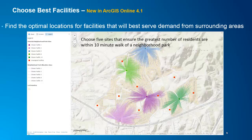In our third example, the facilities are parks. Choose Best Facilities can help us find five sites to build new neighborhood parks so that it will maximize the number of residents who are within 10 minutes walking distance to a park.